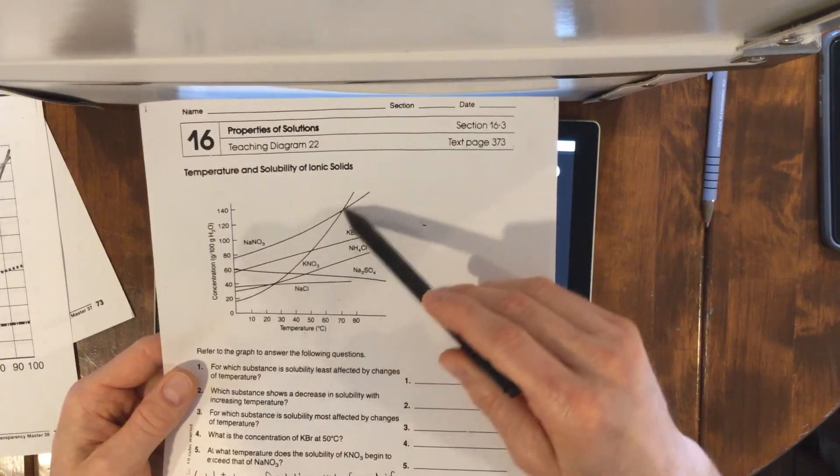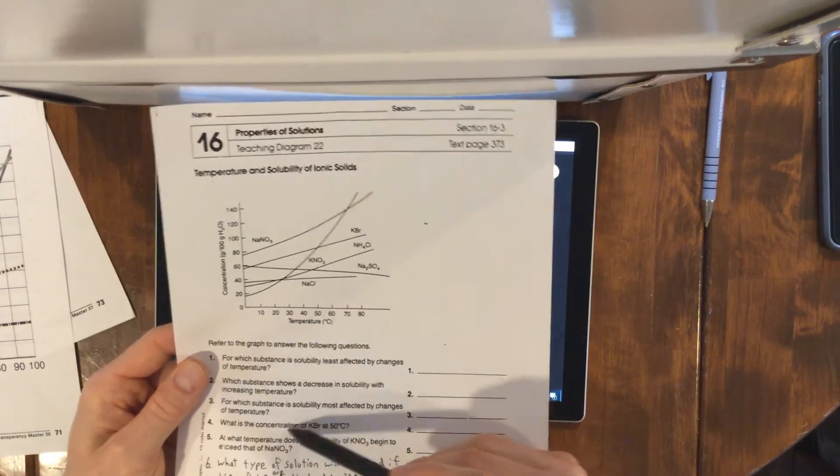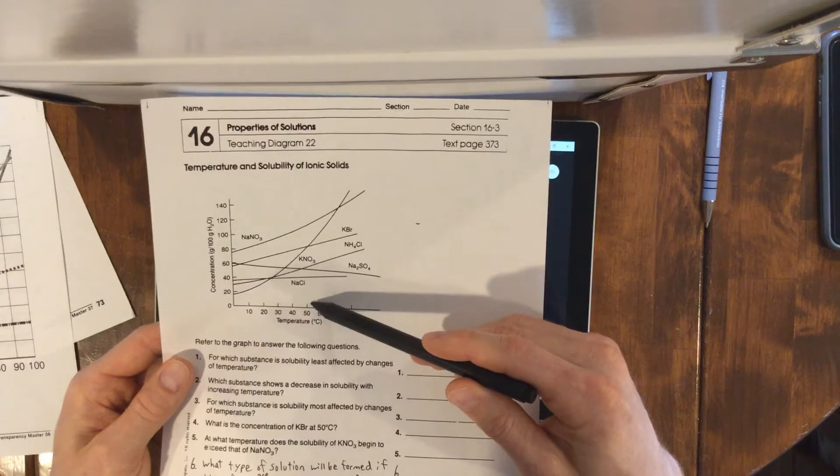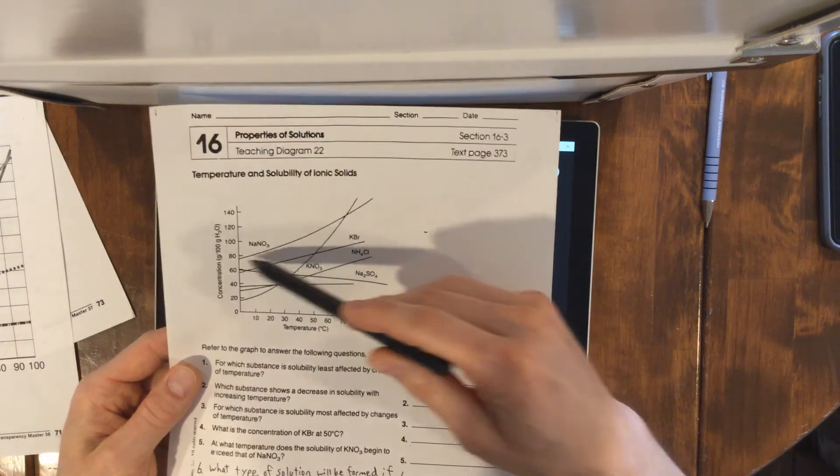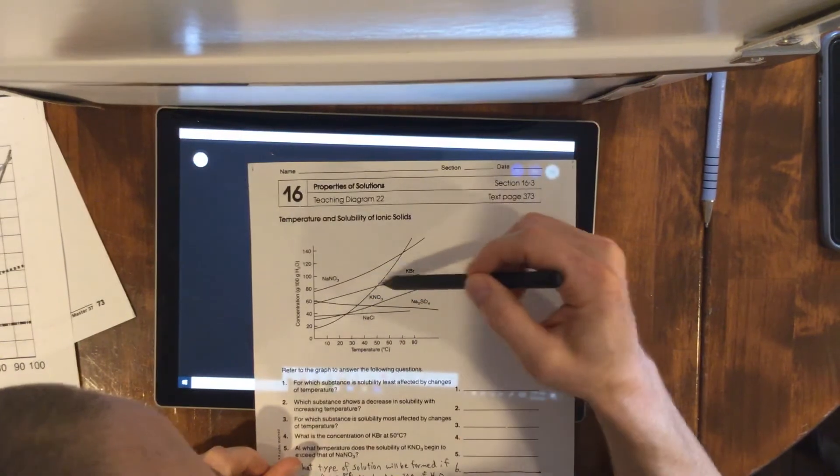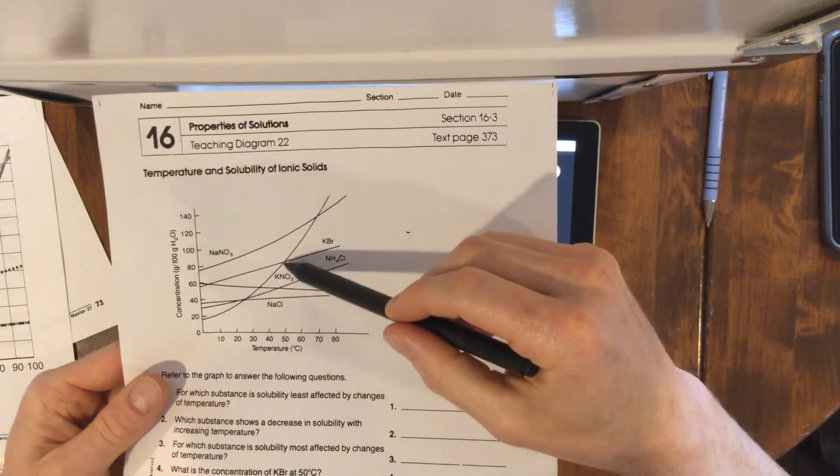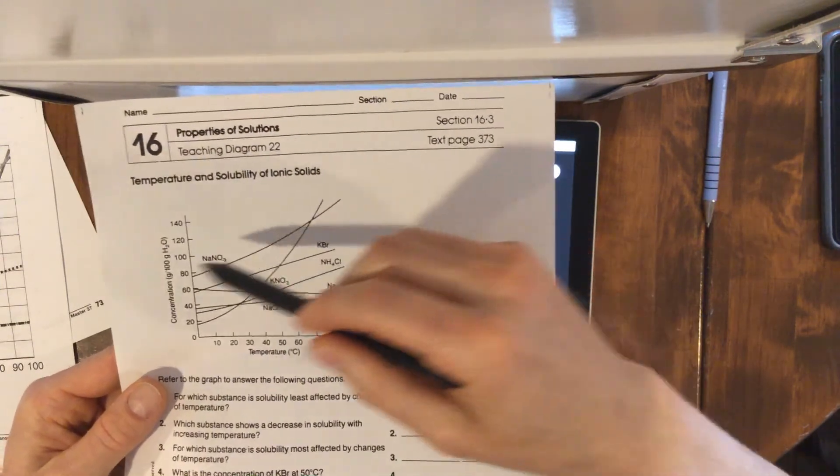What is the concentration of KBr at 50 degrees? 50 degrees, KBr, pretty close to 80. Let's see, a little less than 80, maybe 78 to 79 grams per 100 milliliters of water.